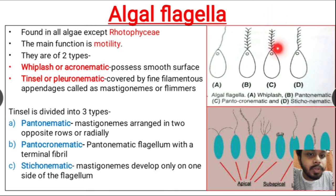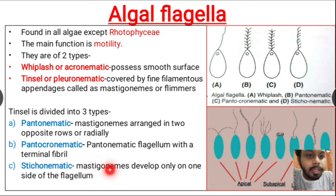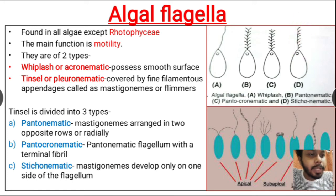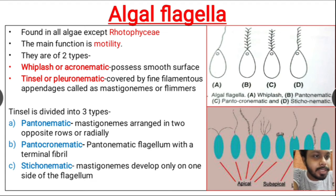The last subtype is stichonemtic, where mastigonemes or filaments develop on only one side of the flagellum. Here we can see that the filaments or mastigonemes are present on only one side.